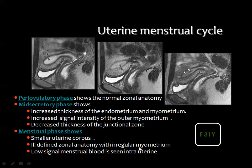There are several changes in the uterus during the menstrual cycle. In the proliferative phase on T2-weighted images, the endometrium is bright, the junctional zone is thin and dark, and the myometrium is gray.